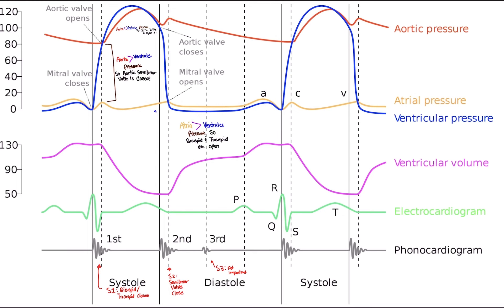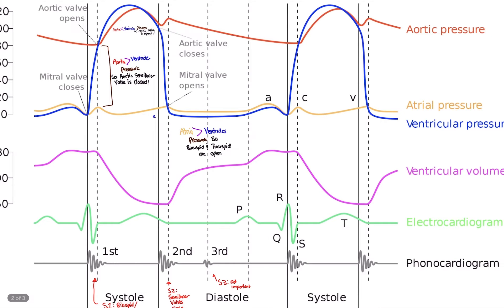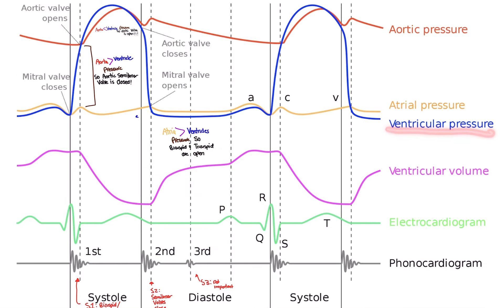You probably see there's a lot going on here. The trick with the Wiggers diagram is to look at the line that says ventricular pressure — the blue line. This is our guide point, our marker, the line we're trying to follow. If you follow this line, it will make life 10,000 times easier. Don't go trying to understand what all the other lines mean — they will come naturally as long as you follow the blue ventricular pressure line.